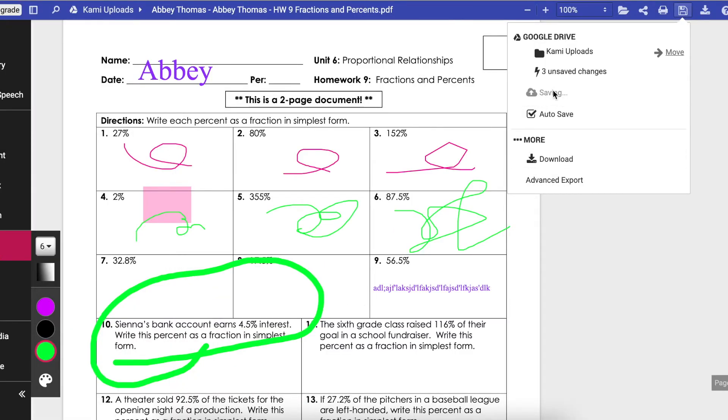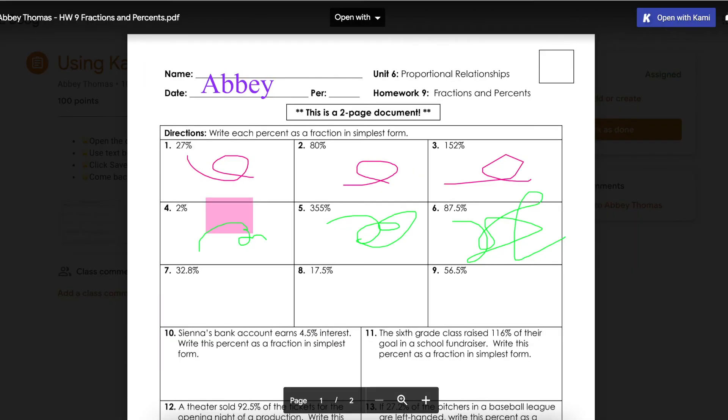Make sure that you choose your correct name and then you can save. Then you can X out of your assignment.